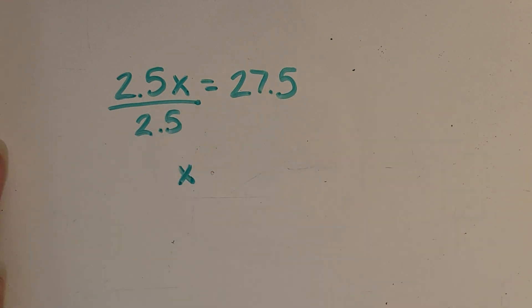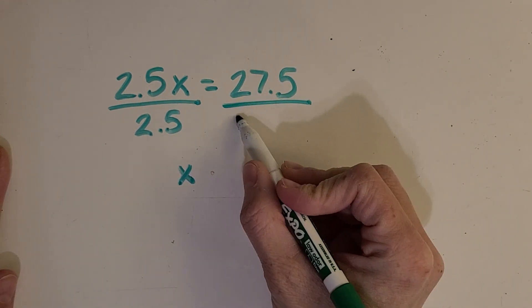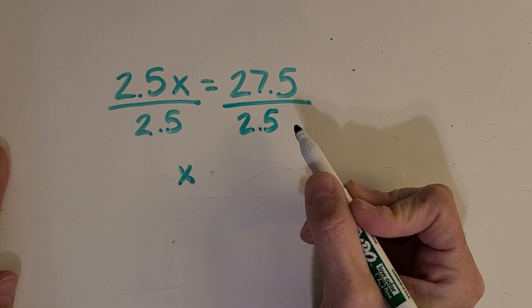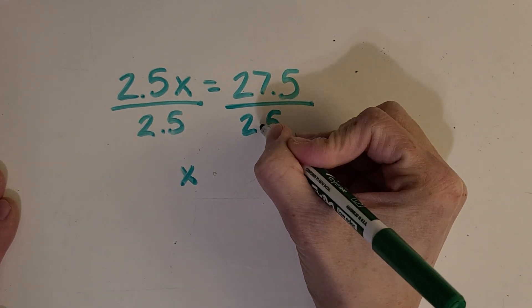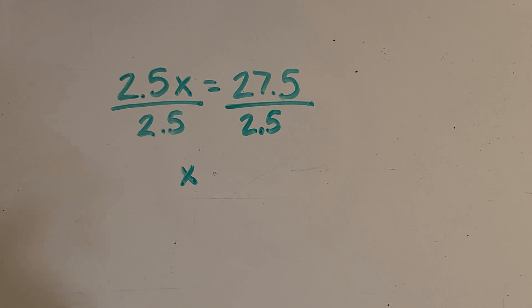And then over on this side, what do I have to do to keep it balanced? Good. I've got to divide by the same thing. So we're going to be doing 27.5 divided by 2.5.